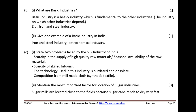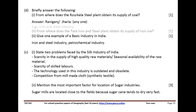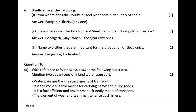Mention the most important factor for location of sugar industries. Sugar mills are located close to the fields because sugarcane tends to dry very fast. From where does the Rourkela steel plant obtain its supply of coal? Answer: Jharia. From where does the Tata Iron and Steel Plant obtain its supply of iron ore? Answer: Bonai.